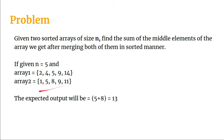If we merge the arrays, the result might look like: 1, 2, 4, 5, 5, 8, 9, 9, 11, 14. That gives us ten elements with indices 0 to 9, so the medians are at index 4 and index 5, which are 5 and 8. The expected output is therefore 13, since 5 + 8 = 13.